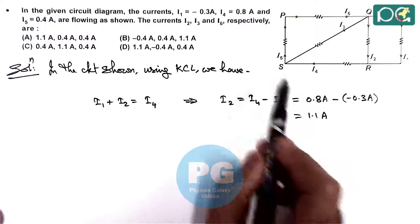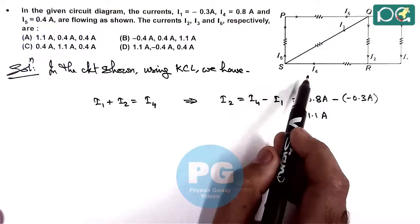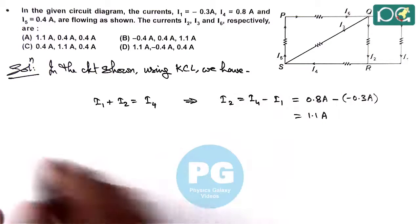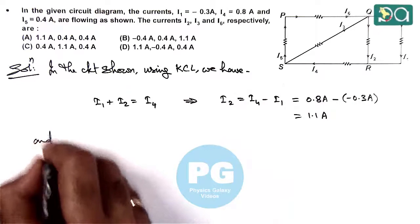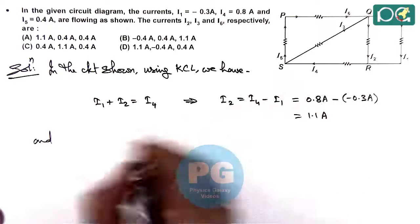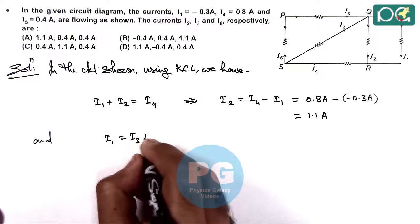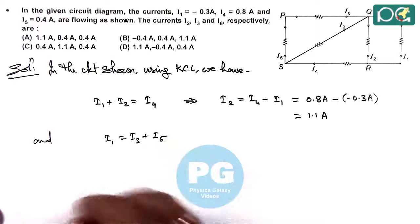by using KCL at junction s. Because i4 is given, i5 is given, we can calculate i3 from using KCL at junction s, which gives i1 is equal to i3 plus i5.